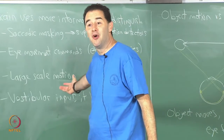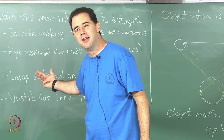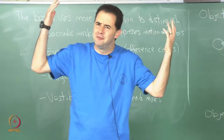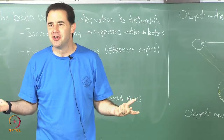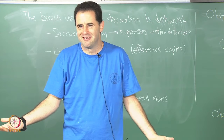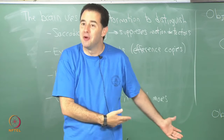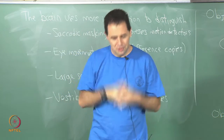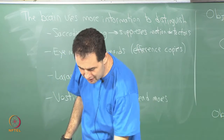These two cases look identical from the image alone, but there is so much more information being obtained by the brain that it can distinguish them. Without that extra information they are pretty much identical — if we think like engineers and just turn on a video signal and look at it, how would the brain know? The brain knows because there is a lot more information beyond just the raw image.